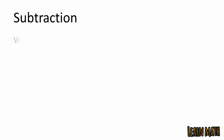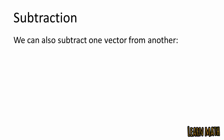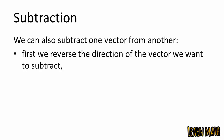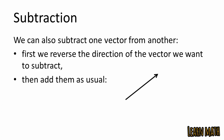We can also subtract one vector from another using the head-to-tail rule. First, we reverse the direction of the vector we want to subtract. For example, with vector A and vector B — the red line represents minus B. When we subtract, A minus B gives the resultant vector shown by the blue line.